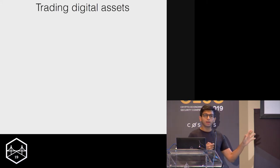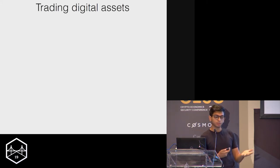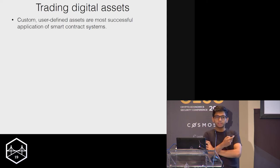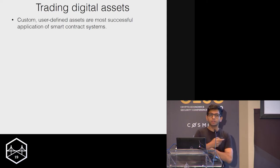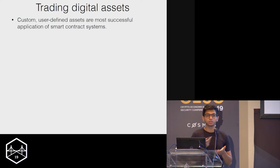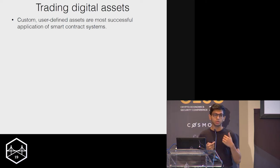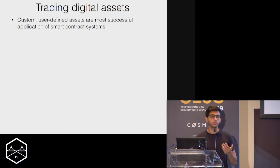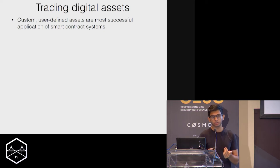Why these particular examples? Arguably, custom user-defined assets are probably the most successful and useful applications of smart contract systems today. So if our system is able to support these applications, we're already supporting a large fraction of useful activity that goes on in these smart contract systems.